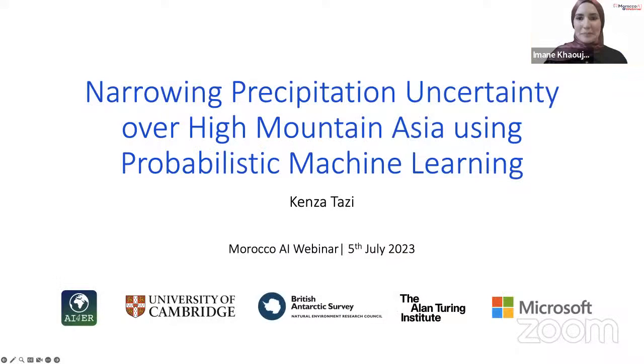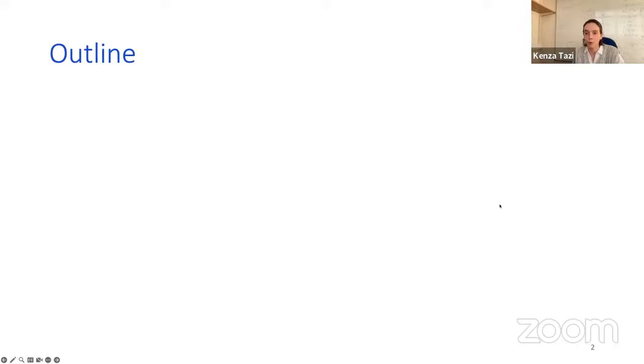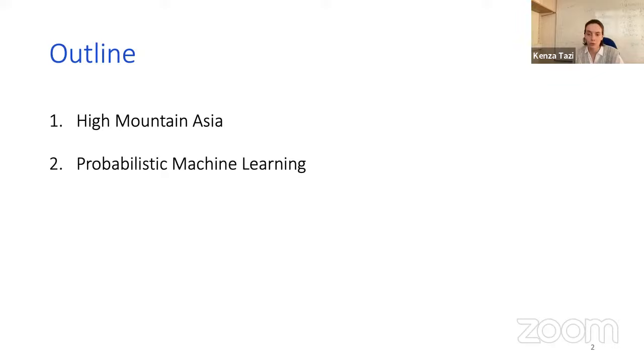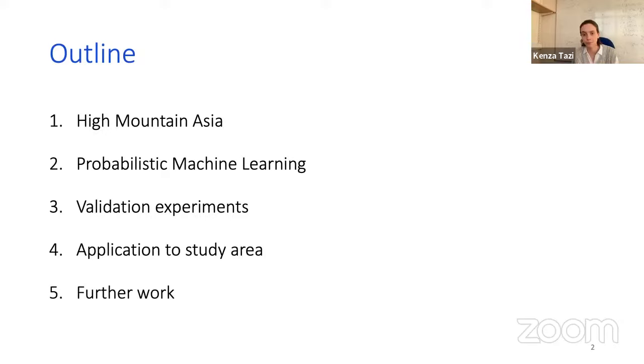Thank you very much, Iman. Good evening, everyone. My name is Kenza, and it's a real pleasure to be here today. I would like to talk to you this evening about how we can use probabilistic machine learning to improve precipitation estimates over High Mountain Asia. So first, I'll discuss why High Mountain Asia is so important and why modeling precipitation in this area is so challenging. Then we'll learn about why probabilistic machine learning is an attractive solution to overcome these challenges. We'll then look at the performance of the model with a couple of validation experiments before looking at the results when applied to the whole study area. Finally, we'll discuss the limitations of this project and ideas for future work.